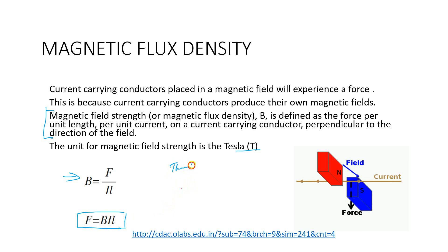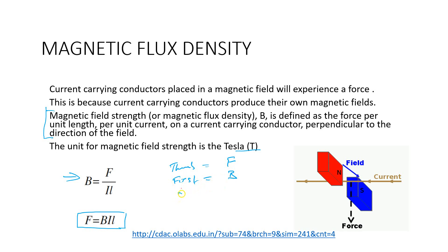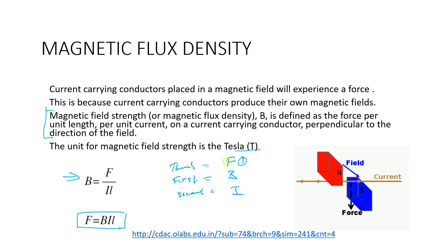We can also rearrange this equation so that the force experienced on a current-carrying wire equals the magnetic field produced by the magnets multiplied by the current multiplied by the length: F = BIL. From the left-hand rule — thumb for force F, first finger for B field, second finger for current I — you can come up with the acronym FBI to remember the whole Fleming's left-hand rule.